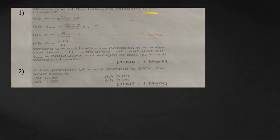The first question is: which one of the following relations is NOT correct? We know that e equals n divided by (1 minus n), so this relation is correct.